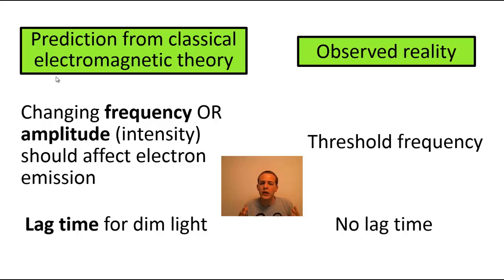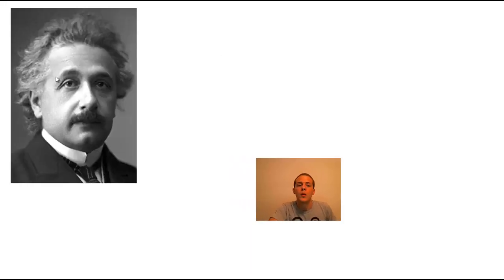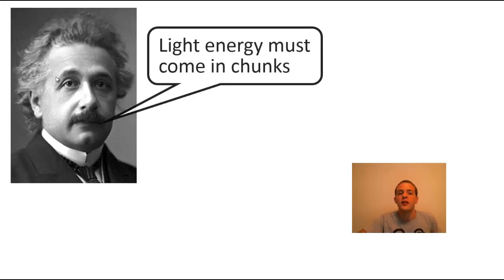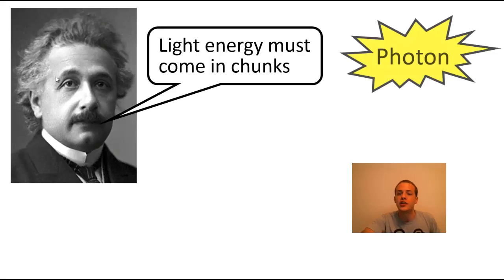So how could we account for all of these discrepancies between classical theory and the observed reality? Well, Albert Einstein came along in 1905 and suggested a very wild proposition. He suggested that light energy must come in chunks. So again, now we're treating light as a particle, not a wave. And a particle of light containing a chunk of light energy is what we call a photon.